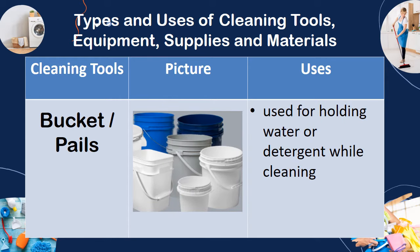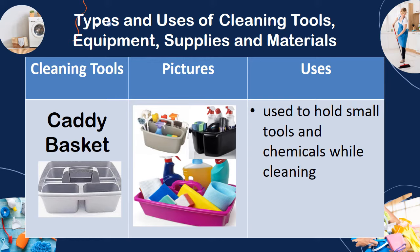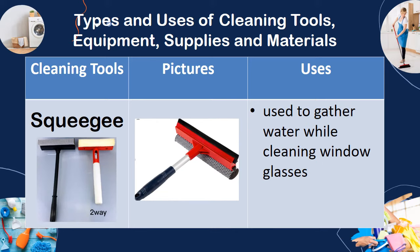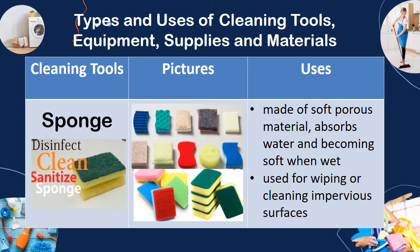Bucket or pails — used for holding water or detergent while cleaning. Garbage bins are available in plastic with a lid to hold gathered garbage and trash while cleaning. Caddy basket — used to hold small tools and chemicals while cleaning. Squeegee — used to gather water while cleaning window glasses. Spray bottles — used to squirt, spray, or mist fluids on dirty surfaces. Sponge — made of soft, fibrous material; absorbs water and becomes soft when wet. It is used for wiping or cleaning impervious surfaces.